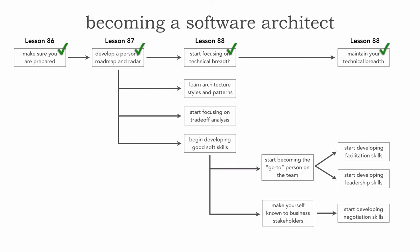In lesson 86 we saw how to look at the checklist to make sure we're ready to start the journey into becoming a software architect. Then in lesson 87 we saw how to develop a personal roadmap and radar. In lesson 88 we focused on how to gain and maintain technical breadth and industry knowledge. If you haven't seen those lessons it would be a good idea to pause this video and take a look at them. In this lesson we're going to take a look at the next step in this roadmap, which is learning architecture styles and patterns.